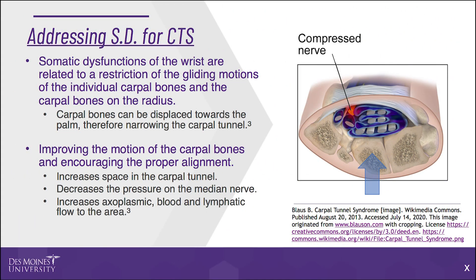Addressing somatic dysfunction of the carpal bones is important regardless of the underlying cause of the carpal tunnel syndrome. Somatic dysfunctions of the wrist are related to a restriction of the gliding motions of the individual carpal bones and the carpal bones on the radius. Carpal bones can be displaced towards the palm, therefore narrowing the carpal tunnel and contributing to congestion or compression on the median nerve.